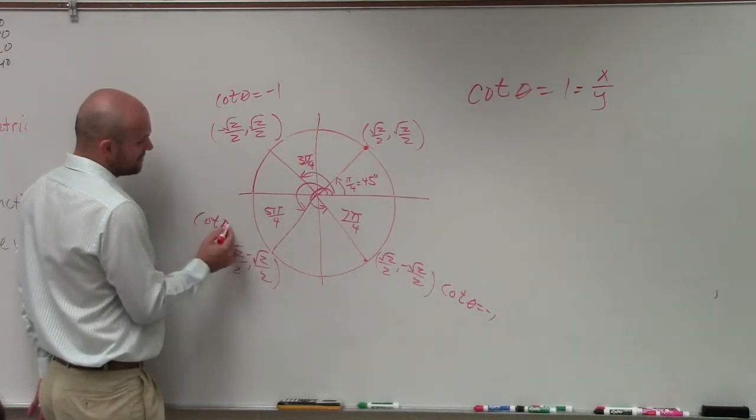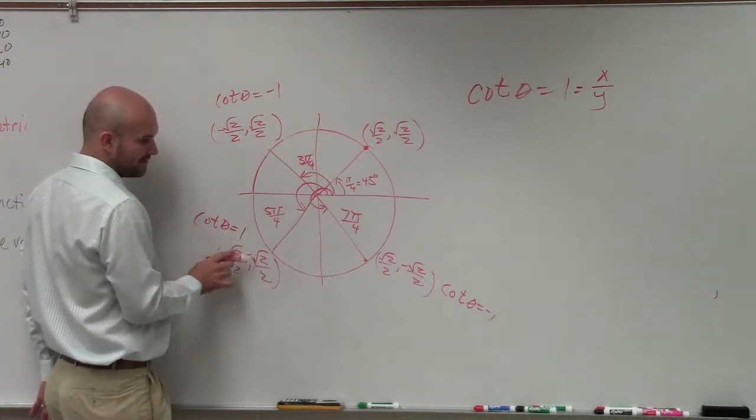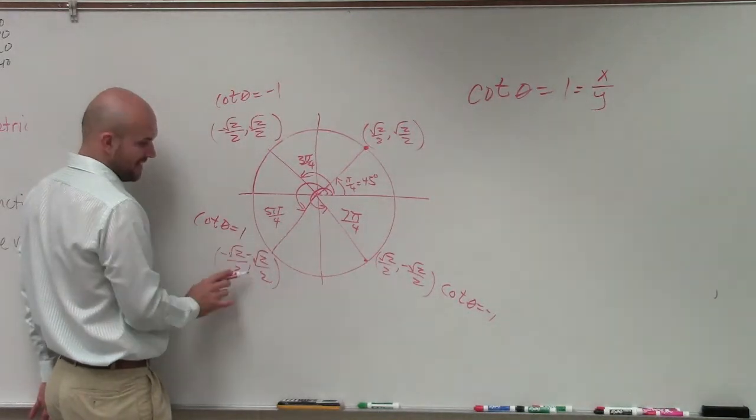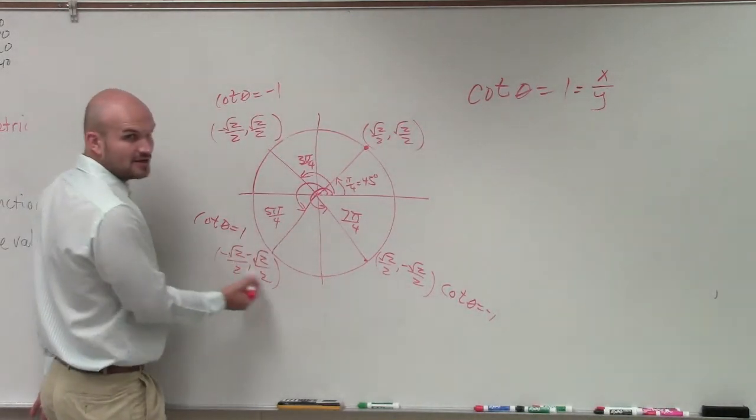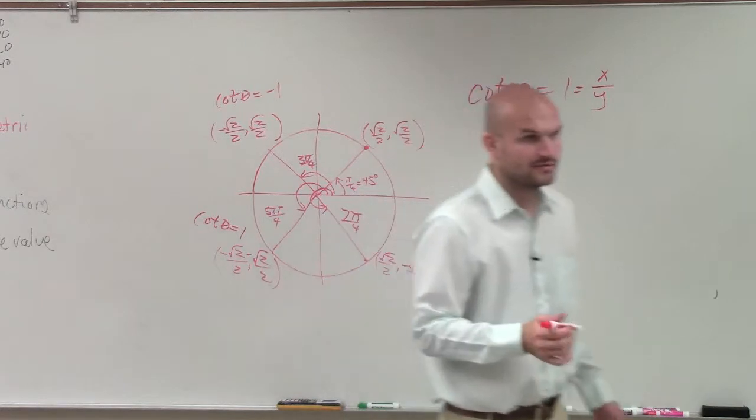So here, my cotangent of theta is still equal to 1, right? For this angle, 5π over 4. Because you see that, how it's x over y is negative over a negative? Do you see that?